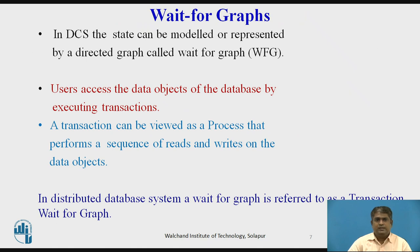In a distributed computing system, the state can be represented by a directed graph called a Wait-for Graph, also denoted as WFG. In a WFG, nodes are processes, and there is a directed edge from node P1 to node P2 if P1 is blocked and waiting for P2 to release some resource. A system is deadlocked if and only if there is a directed cycle in the Wait-for Graph.